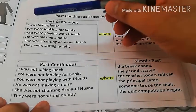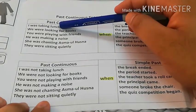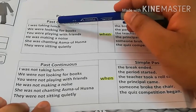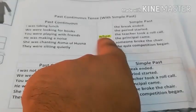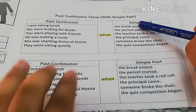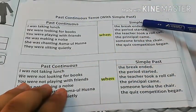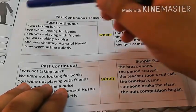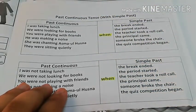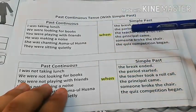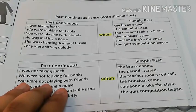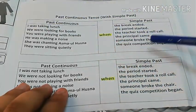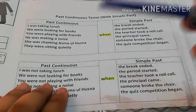Let me take one example from the first sentence: 'I was taking lunch' — this is the ongoing or interrupted action. When we complete the sentence: 'I was taking lunch when the break ended.' You can give a second reason: 'I was taking lunch when the period started.' Third reason: 'I was taking lunch when the teacher took a roll call.' Fourth: 'I was taking lunch when the principal came.' Also: 'I was taking lunch when someone broke the chair' and 'I was taking lunch when the quiz competition began.'